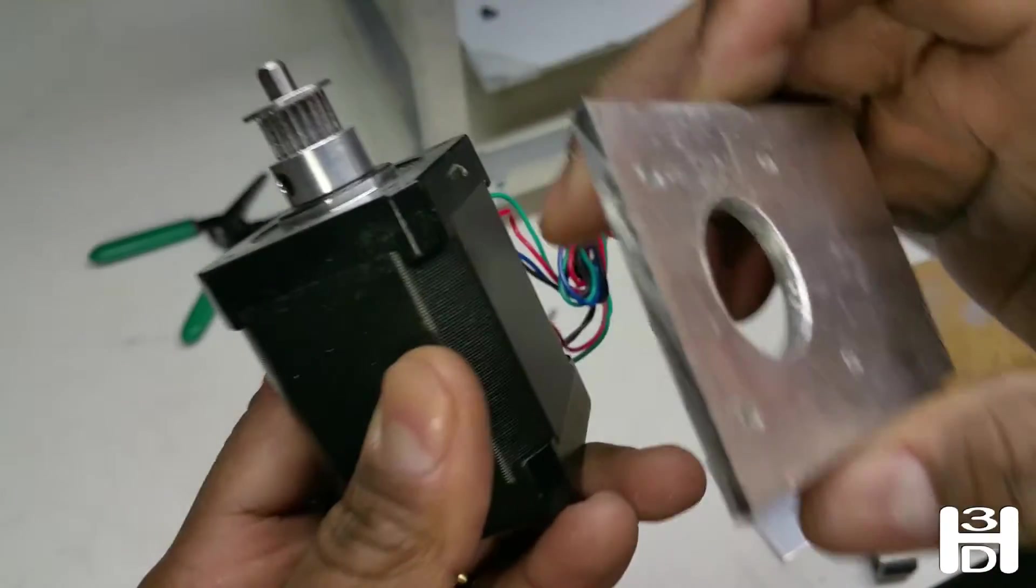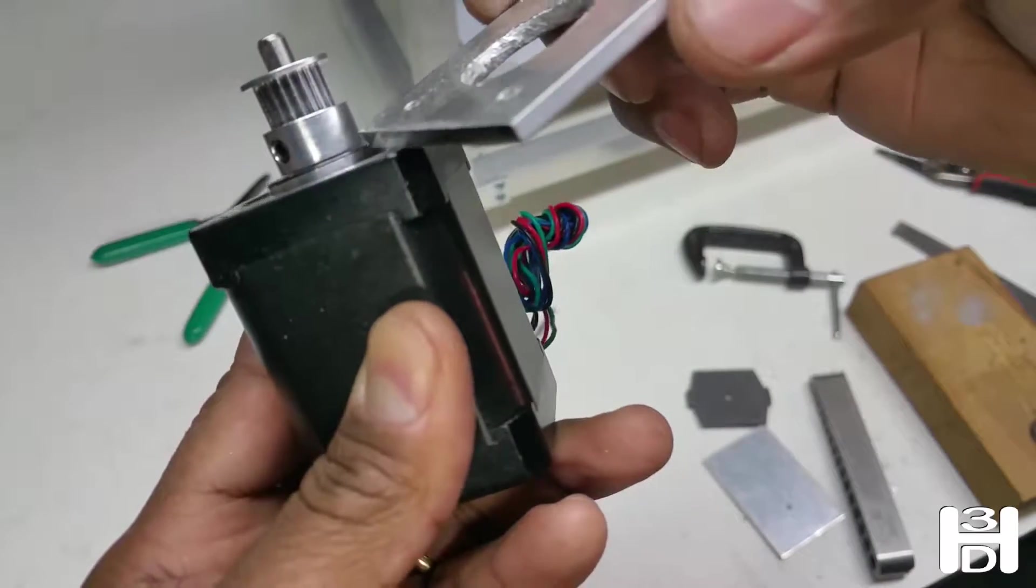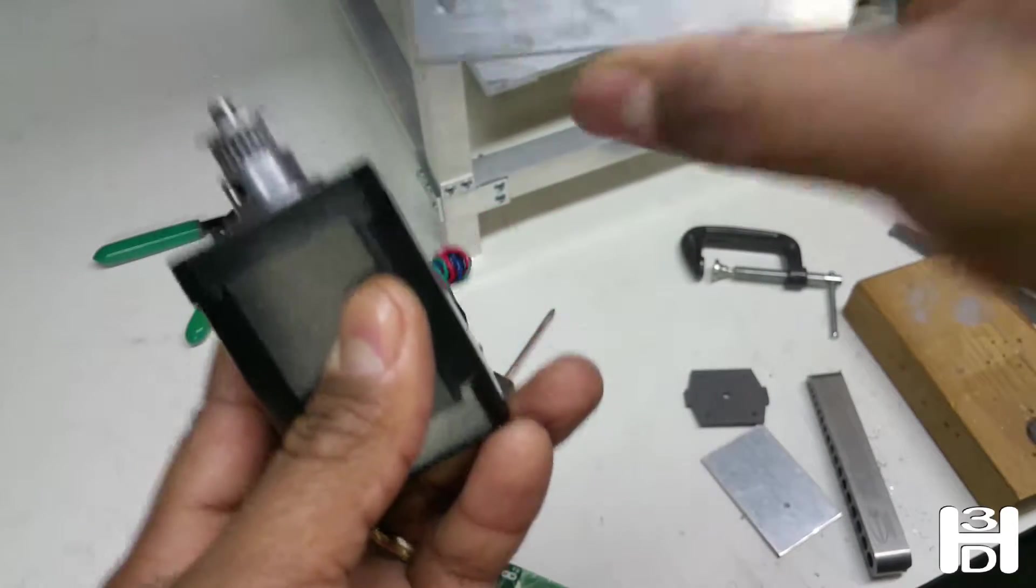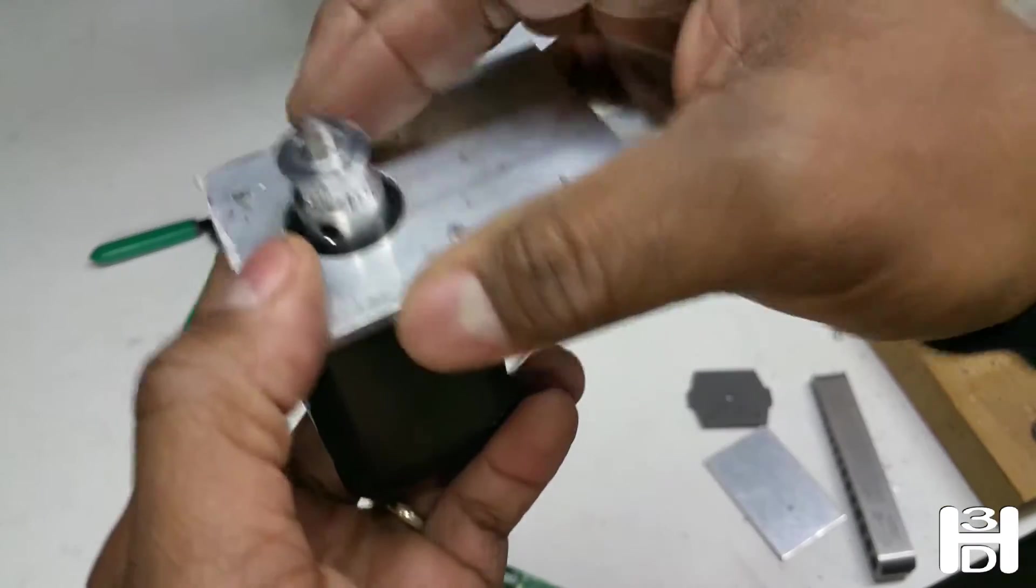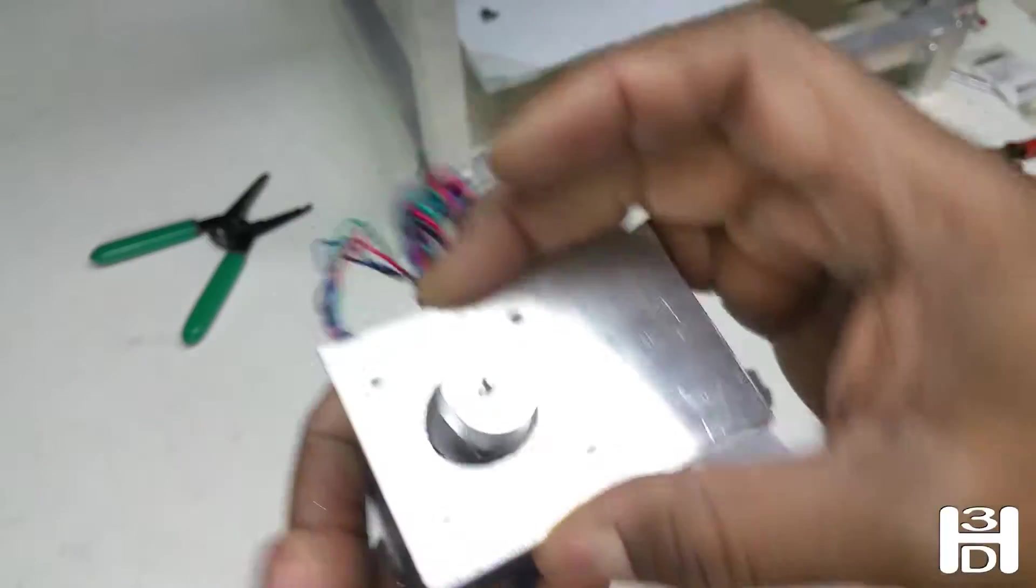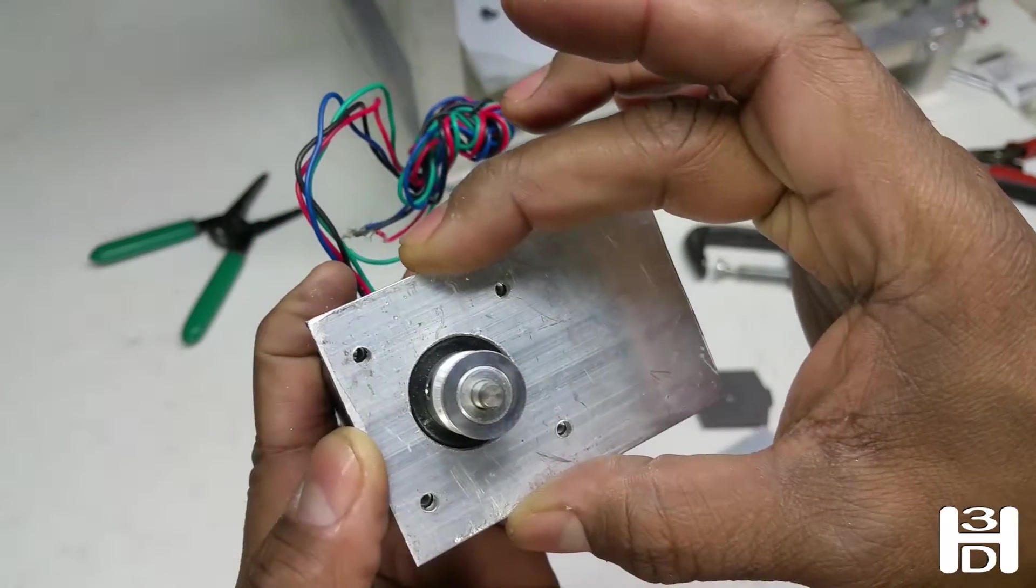It fits over a motor. Notice that your NEMA 17 has a raised up center - that's why this hole needs to be that big, so it can fit over that center and still be flush, and the holes line up.